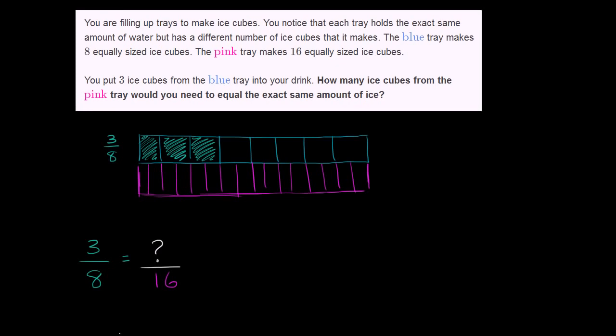Well, let's look at it over here visually. So if we want the exact same amount of ice, we're going to have one, two, three, four, five, six. We have six over 16. So this is equal to six over 16. Six over 16.